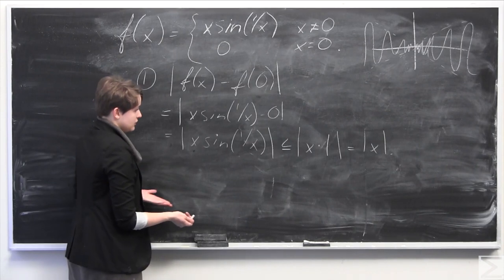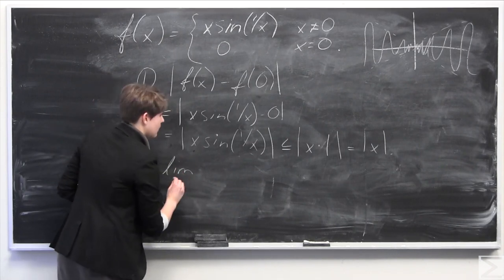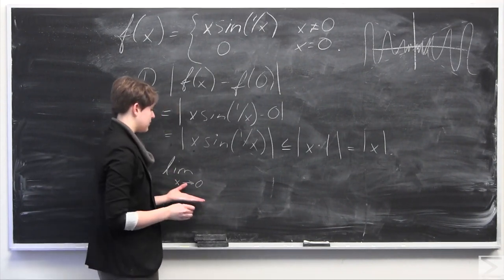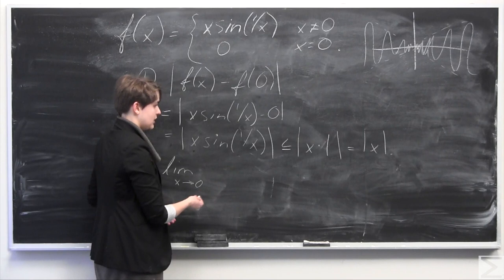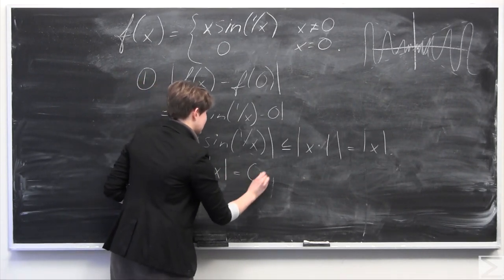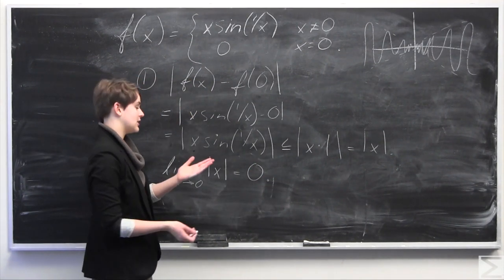So now, using the definition of continuity, we're going to take the limit as x approaches 0, which is the point at which we are trying to prove the continuity of the function. We take the limit as x approaches 0 of the absolute value of x, and it does indeed equal 0. Therefore, we know that our function is continuous at x equals 0.